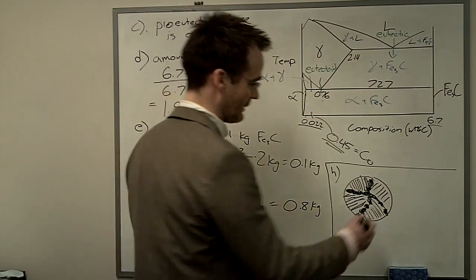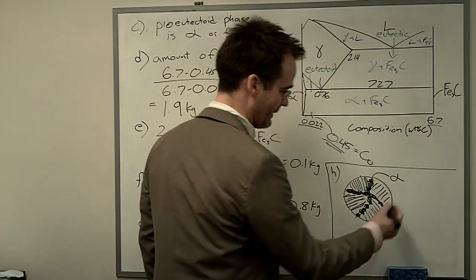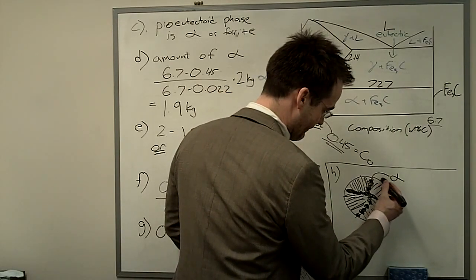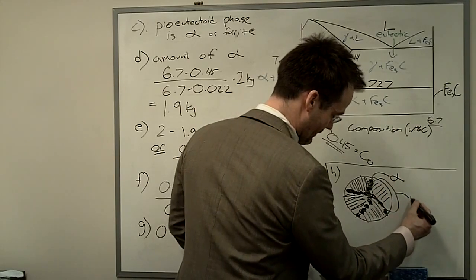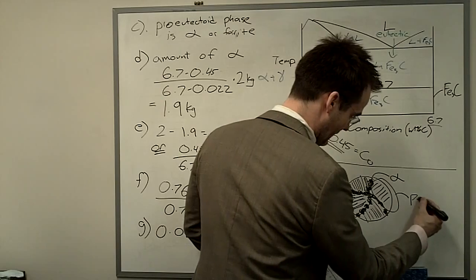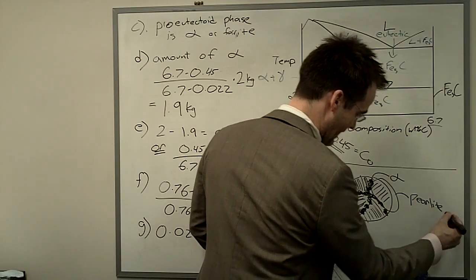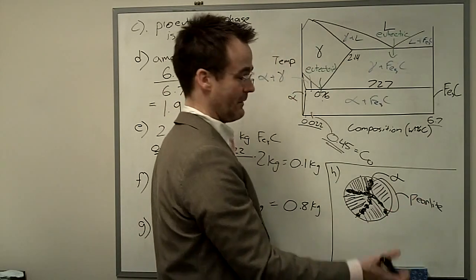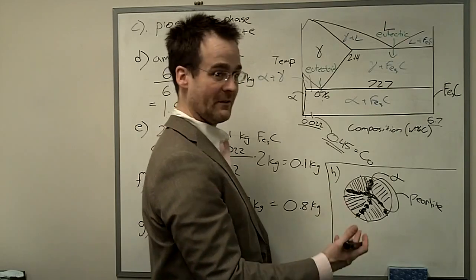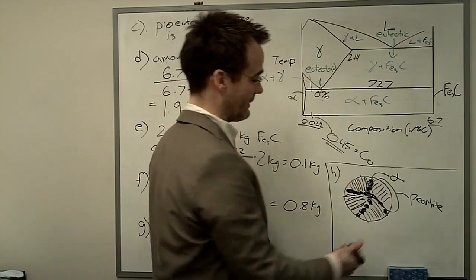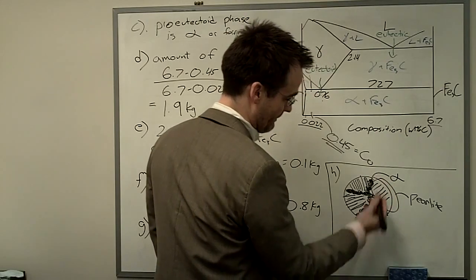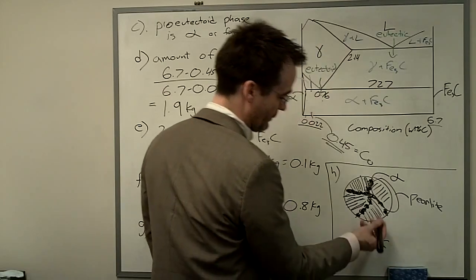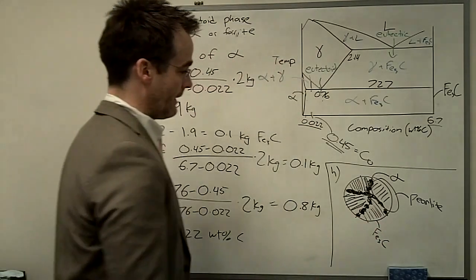This says also label the phases. So let's just do that. So we've got ferrite right there. We've got, then, this here being perlite. Now, actually, this is a little, I didn't really need to label that as perlite. If the question is strictly just asking for phases, the only phases are ferrite plus cementite. So if the black one is ferrite, then this has to be Fe3C, the white phase. And those are the only two phases.